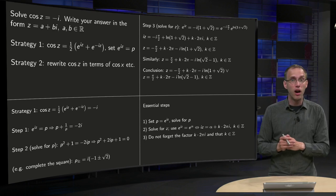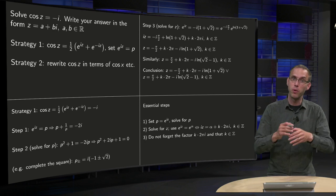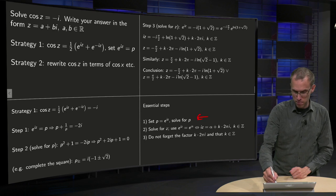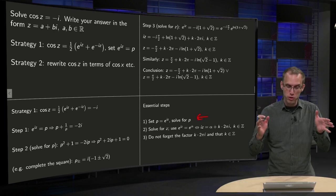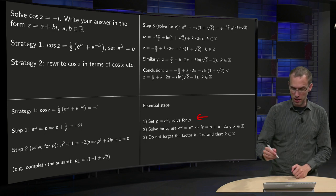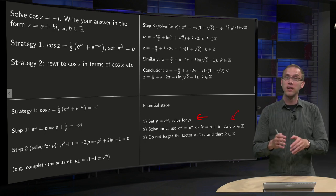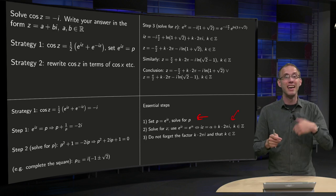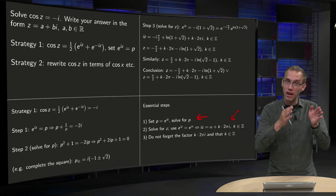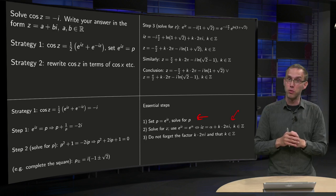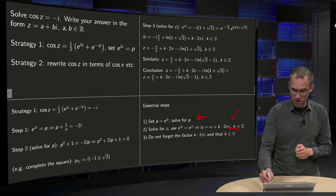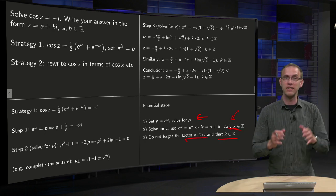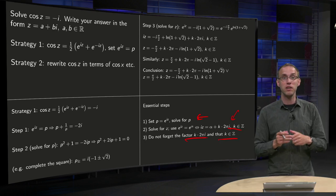Let's go swiftly through the essential steps for this first method. First step: set p equals e^(iz) and solve for p. Second part: solve for z — at some point you get e^(iz) equals e^α, and you use iz equals α plus a multiple of 2πi, where k is in ℤ. Third: do not forget this factor, and do not forget k is in ℤ.